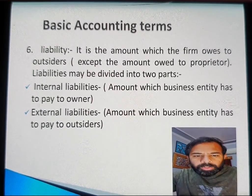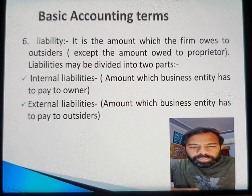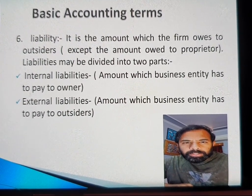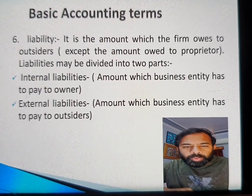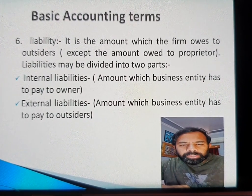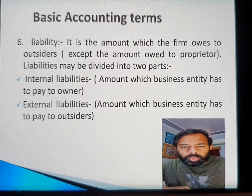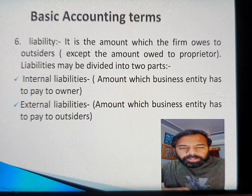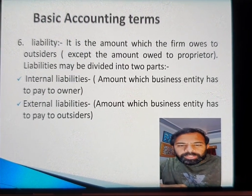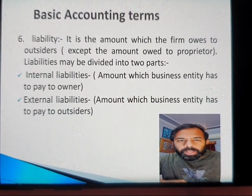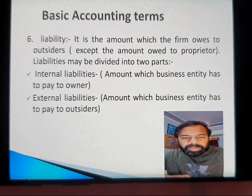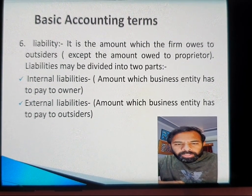Today we will continue with chapter number two on basic accounting terms. In the previous video we already discussed terminology related to capital, business transaction, event, and liabilities — including internal and external liabilities. As a quick revision: liability means the amount which the business owes to an outsider, or which can be paid by the firm to the outsider — that is called liability.